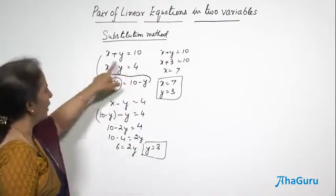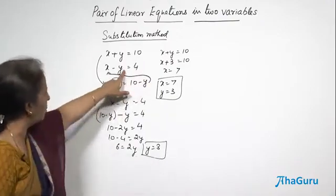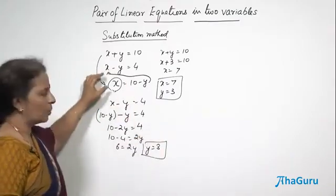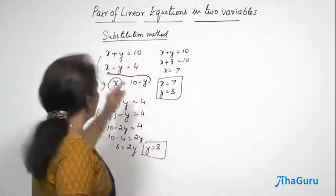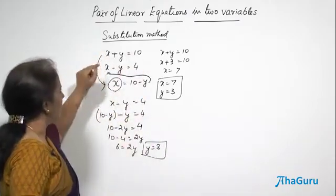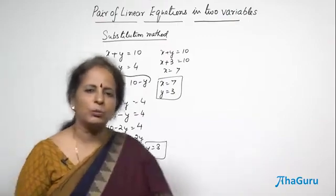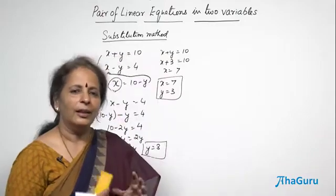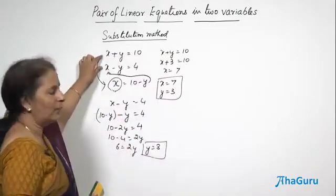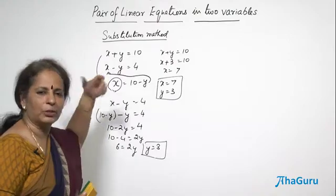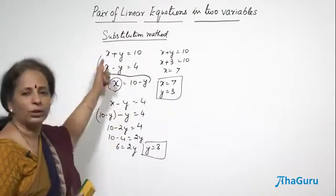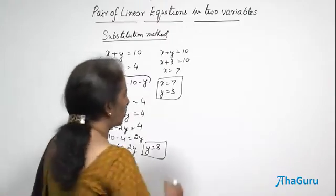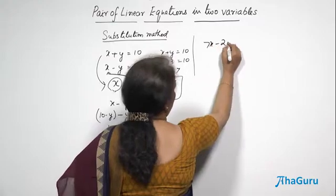Once you get the value of one variable, you can substitute it into either equation to find the other. Such questions can be done easily as long as the coefficients of x and y are small numbers and not fractions. It's not impossible with fractions, but it becomes more work. Whenever coefficients are small — one, two, or three — the substitution method is straightforward. Let us do one more question: 7x minus 2y equals 21 and 4x plus y equals 57.